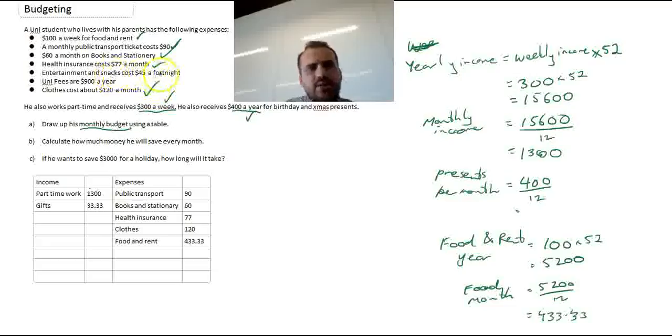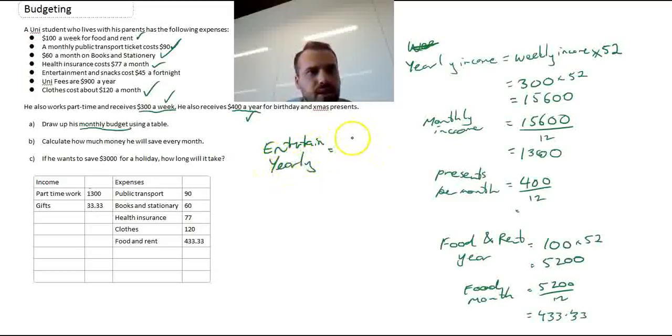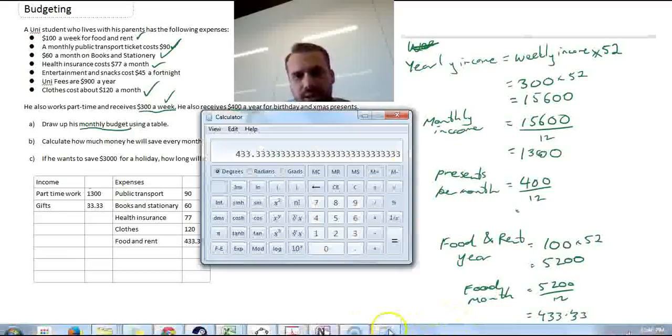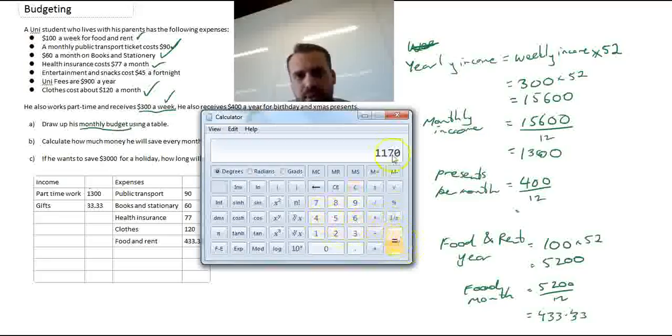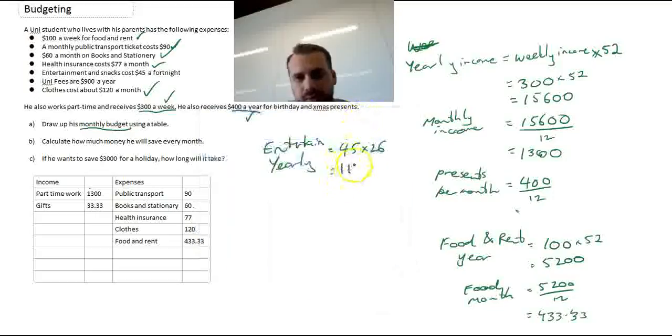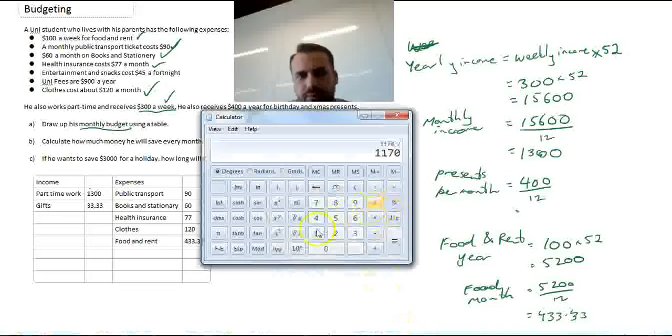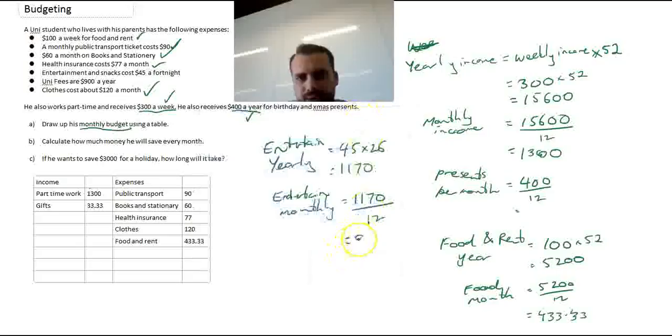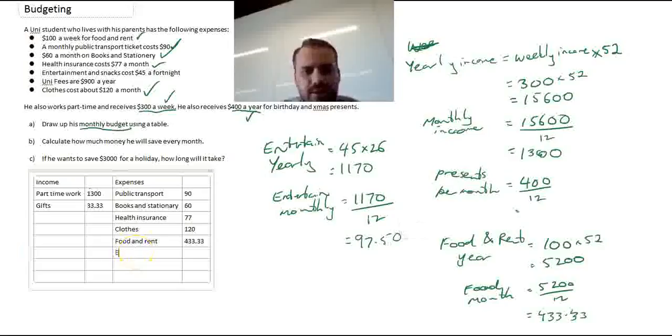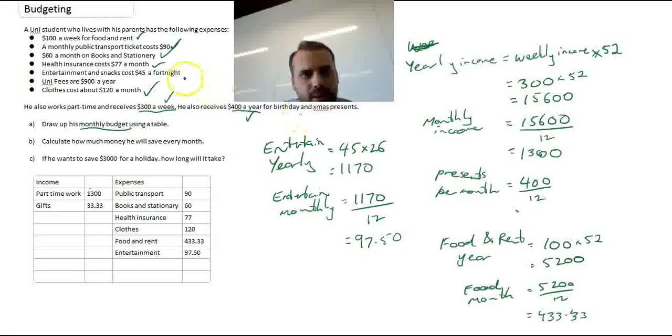We've done food and rent, public transport, books and stationery, health insurance. Entertainment and snacks cost $45 a fortnight. So entertainment. Because we're dealing with months, we're going to have to convert this to a yearly one. Now, a fortnight is two weeks, so there's 26 fortnights in a year. 45 times 26 will give us our yearly entertainment amount, which is $1,170. And then convert it to monthly entertainment. $1,170 divided by 12. That's $97.50. Entertainment, $97.50 per month.